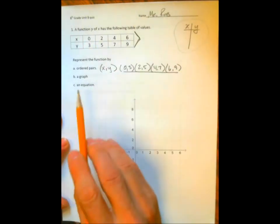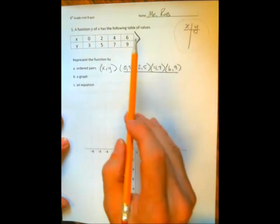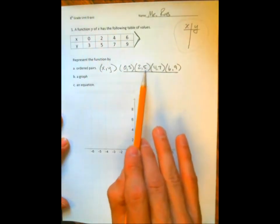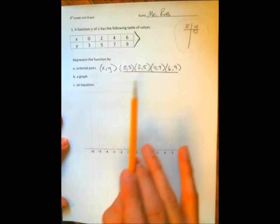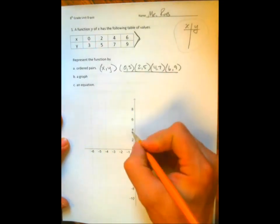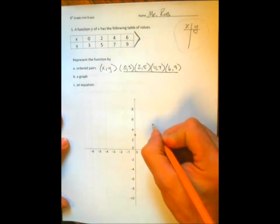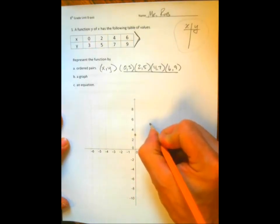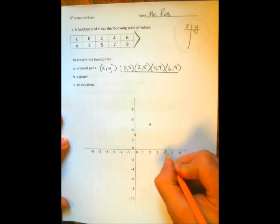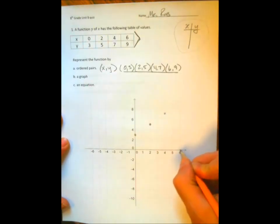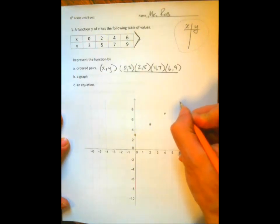To graph this function, it's very simple. You use the t-chart given to create the ordered pairs. Plot (0,3), (2,5), (4,7), and (6,9).